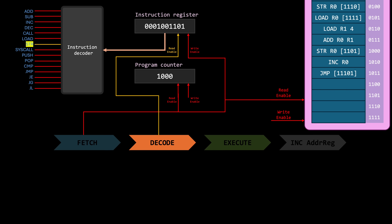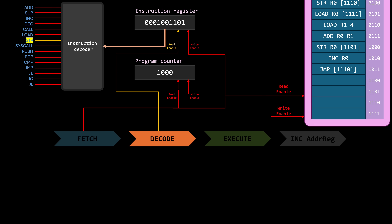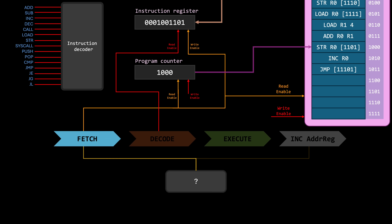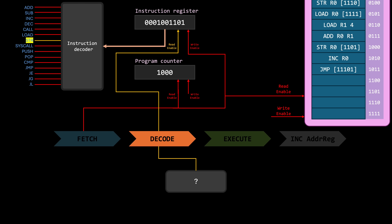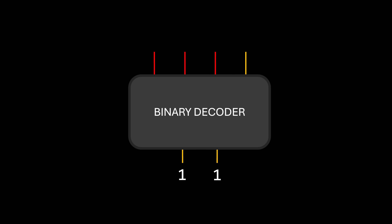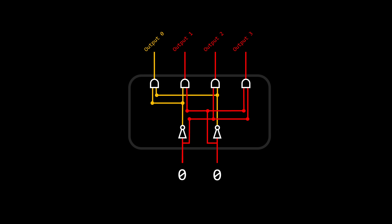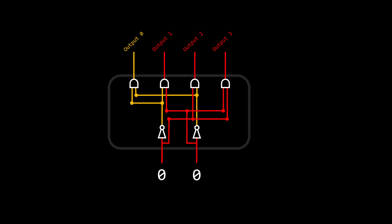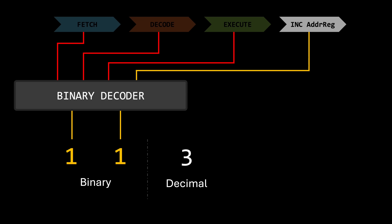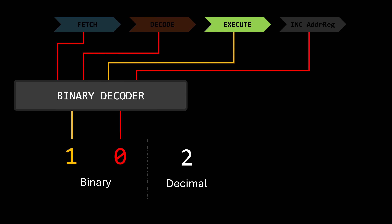That's essentially what we need to achieve — activate only the circuitry for the current stage. In other words, we need circuitry that can select between multiple options. Fortunately, we've encountered binary decoders before. A binary decoder is a circuit made from logic gates — when provided with a binary input, the decoder activates only one output, the one corresponding to the binary input value. We only need to figure out an electronic mechanism that periodically increments the decoder's input so the CPU can perform these stages sequentially.